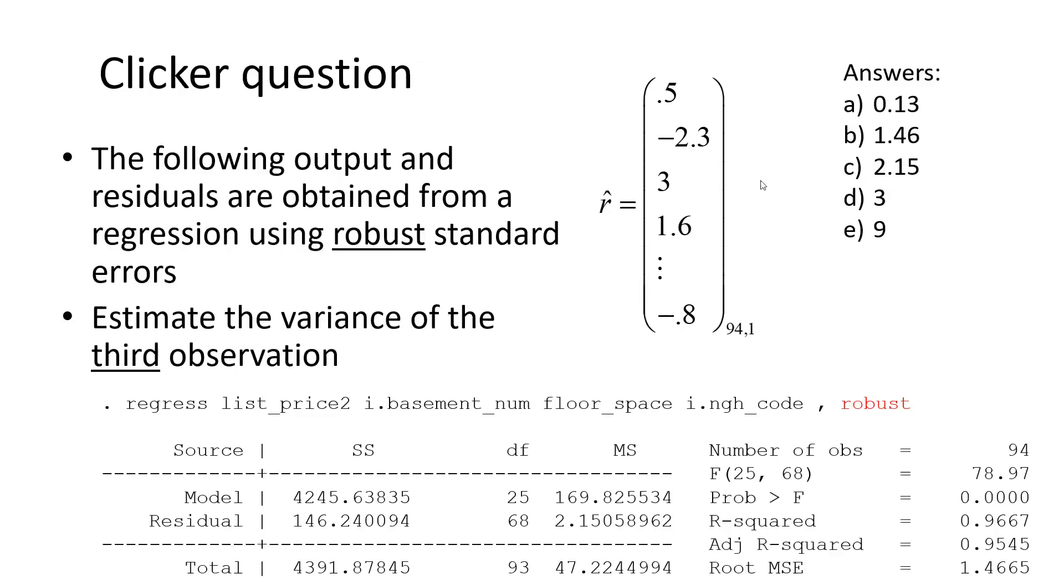I'm giving you an excerpt of a residual vector here. And I'm interested in the question of what is the estimate of the variance for the third observation? This is the third observation. So you have five choices here. And I'm looking for the estimate of the variance for this number, three, under robust standard errors.